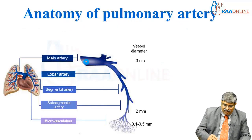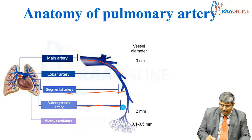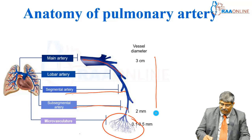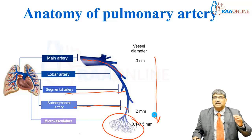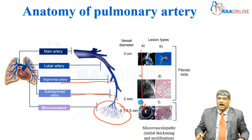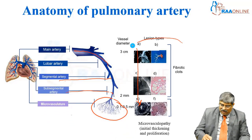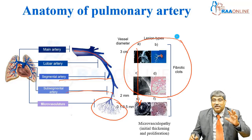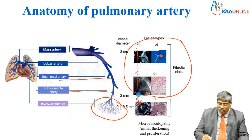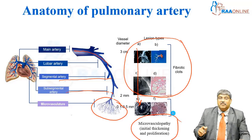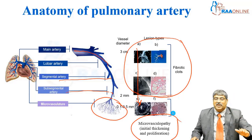You can see the main pulmonary artery, then lobar artery, segmental artery, subsegmental artery, and this is the micro vasculature. So from a size of 30 millimeters, it comes down to 0.5 millimeters in the micro circulation. This part up to the subsegmental artery is where you will have fibrous clot — the clot goes up to the level of the subsegmental artery.